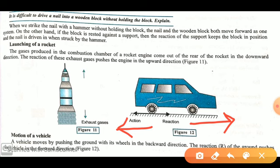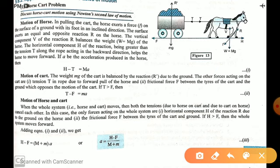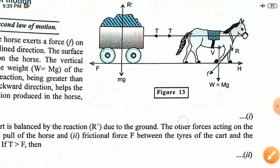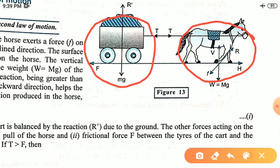After these daily life examples based on Newton's third law, a very important application is the horse and cart system. To analyze it, we consider three systems: the motion of the horse as one system with its free body diagram, the motion of the cart as another system, and the combined motion as a whole system.